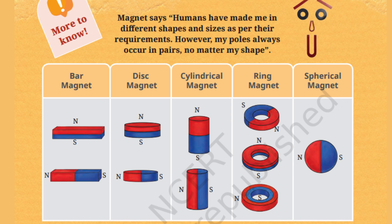The most common ones are bar magnet, disc magnet, cylindrical, ring, and spherical magnets. Look at this picture — you can see how the position of the poles changes based on their shape. Some magnets have poles on the ends, others on flat faces or even on the inside and outside.